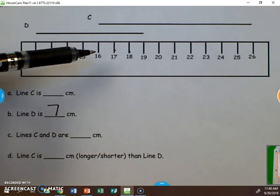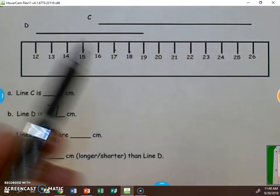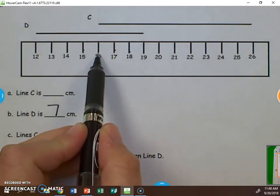Looking at line C, it starts at 16. It stops at 26. So we will start at 16 and count our way to 26.